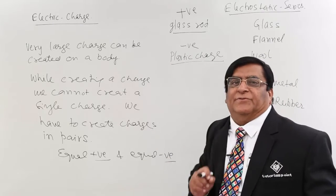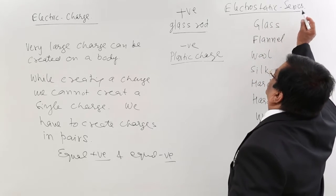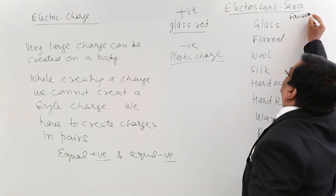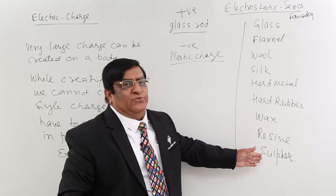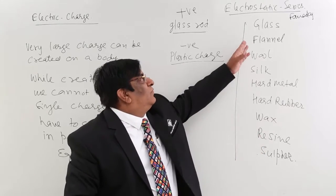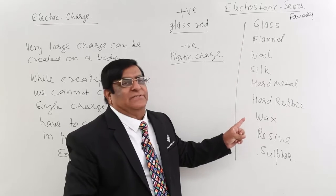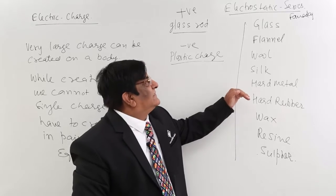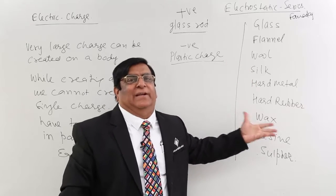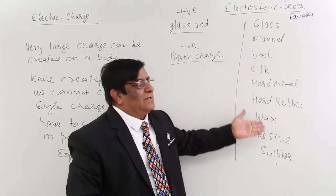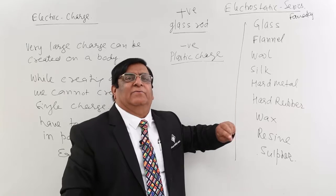With help of this principle he made a series which he called Faraday series or electrostatic series. In this series he put a few day to day use materials. The rule is that whenever any two objects of the series are rubbed together, the one which is higher in the series will get positive charge and the one which is lower in series will get negative charge. This helps us find out whenever we rub two things, which one will get which charge.